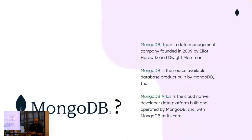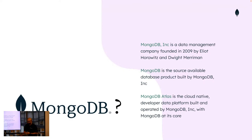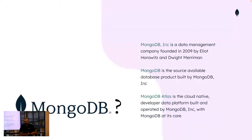If you're not familiar with MongoDB, it was founded in 2009 by two gentlemen, Elliot and Dwight. MongoDB is the source-available data product built by MongoDB Inc. — an open source product backed by that company. MongoDB Atlas is our cloud-native developer data platform built and operated by MongoDB, with MongoDB the database at its core.